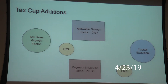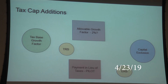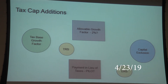The tax-based growth factor, shown in the green circle, reflects growth in the number of residences in the area and also has an assessed value component. For the last two years, that's been pretty significant — Beacon has been the highest in Dutchess County — so it's allowed us to grow our tax cap more than usual.